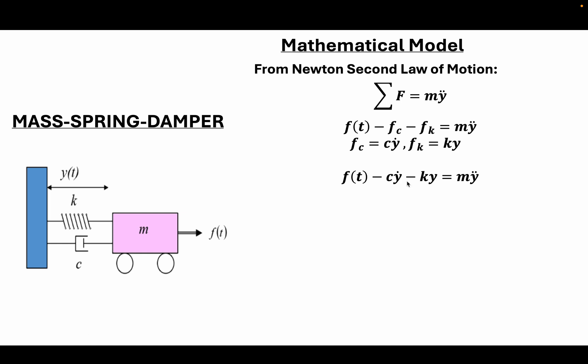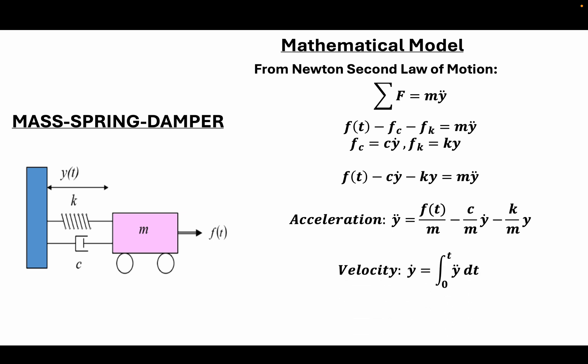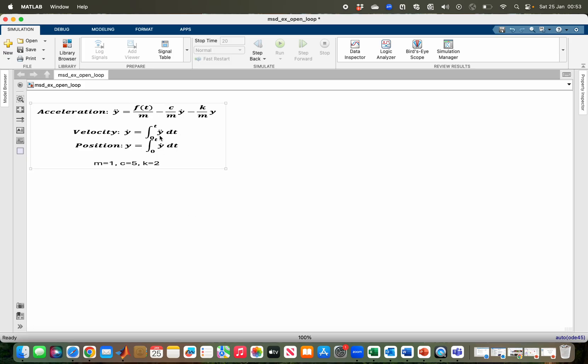Substituting those expressions, we get the primary equation where acceleration y-double-dot is the subject. We integrate acceleration over time to obtain velocity, and integrate velocity over time to obtain position. These are the set of equations we are implementing. Our model parameters are: mass = 1 kg, damping coefficient = 5, and spring constant = 2.